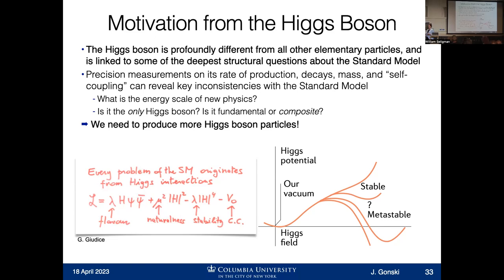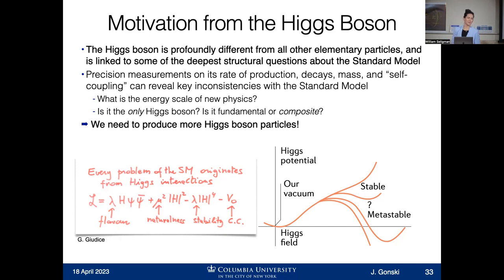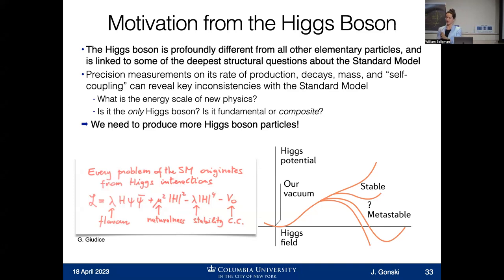The Higgs is the newest particle in the standard model. We have the least precision on measurements of its properties — we don't know to great precision what it decays to, the rate of production in a proton-proton collision, its mass, its self-coupling, how often those interactions happen. All of these sorts of studies would point us to the next place to look in expanding our model. For example, studying the features of the Higgs could tell us what the energy scale of new physics is. We have a collider running at 99.59% the speed of light — do we need to go even higher to find that new physics? We also don't know that the Higgs boson is the only Higgs boson, or that it's even fundamental.